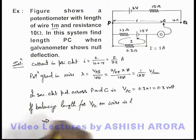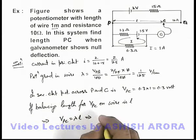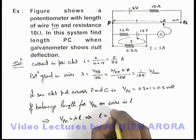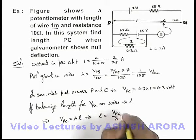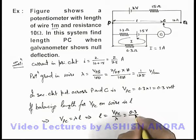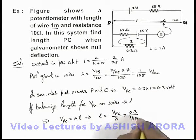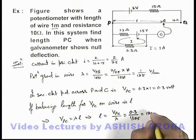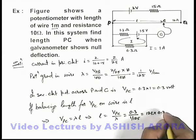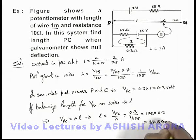This implies we can write Vpc equals lambda l, this implies the value of l we are getting is Vpc by lambda. Vpc here we have is 0.3 divided by lambda, we can directly write it as 1 by 125, so it'll be 125 multiplied by 0.3 which is equal to 37.5 centimeter. That'll be the answer to this problem.